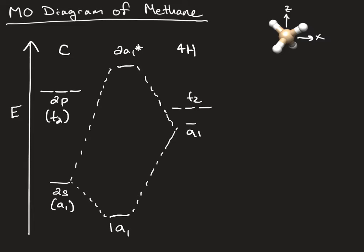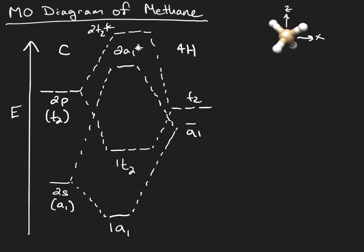We get the in-phase and out-of-phase combinations on the A1s and the in-phase and out-of-phase combinations on the T2s. Going in and filling in our eight electrons, we arrive at this picture.